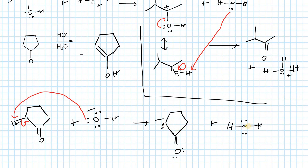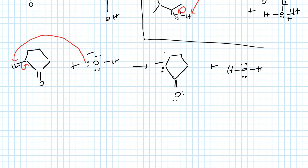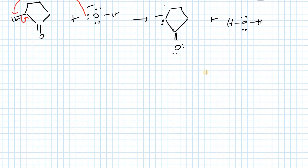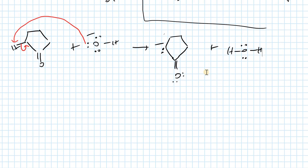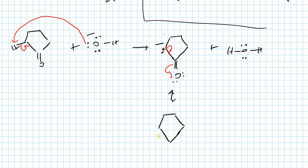In the second step we can show a resonance form for this intermediate. What happens is we can form a double bond here — an alkene — and we can form an enolate ion. There is going to be an alkene, and the oxygen carries a negative charge, giving us the enolate.